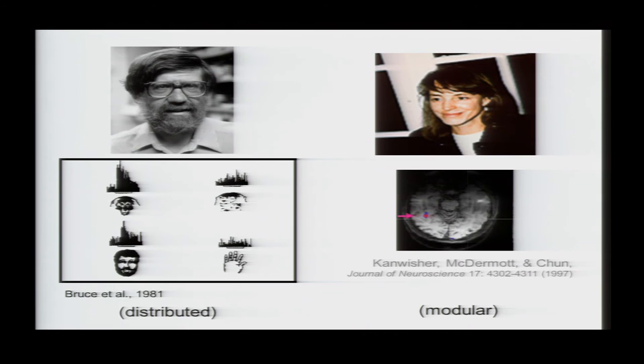And these cells were reported to be distributed throughout IT cortex. And then in 1997, Nancy Kanwisher, using fMRI in humans, reported the discovery of an area in the human brain that responded selectively to faces. And this was very interesting because it suggested that these cells might actually be clustered into one single area.